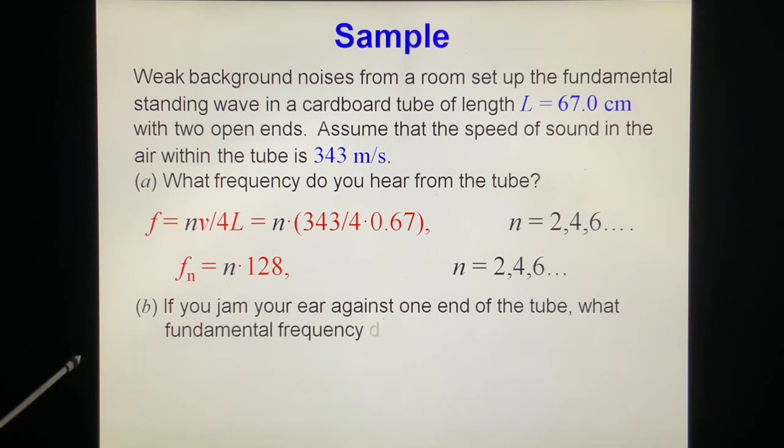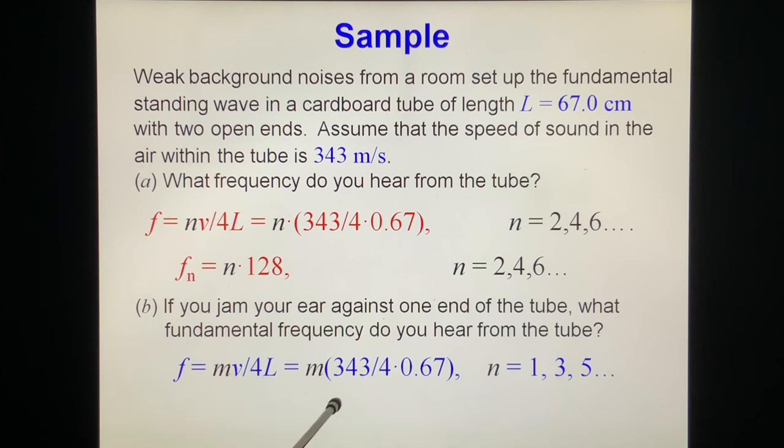If you jam your ear against one end of the tube, what fundamental frequency do you hear from the tube? When you jam one end of the tube, this tube becomes one open, one closed. So we have to use another formula. This number, you have to use the odd number, 1, 3, 5, 7, and so on. So this is equal to m, 128. This m is 1, 3, 5, it's odd number. This is even number.